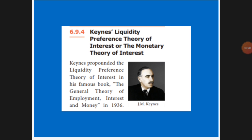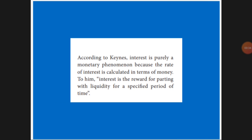According to this theory, the rate of interest is calculated in terms of money only. Interest is the reward for parting with liquidity for a specific period of time. The money you keep for one month will earn different interest than if you keep it for more than six months — the interest will differ.